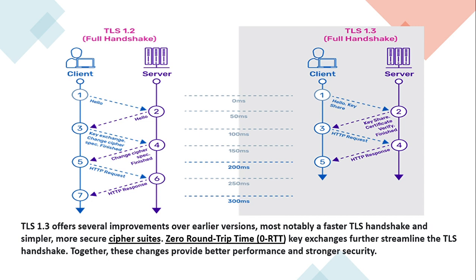TLS 1.3 offers several improvements over earlier versions — most notably a faster TLS handshake and simpler, more secure cipher suites. Zero round-trip time key exchanges further streamline the TLS handshake. Together, these changes provide better performance and stronger security.